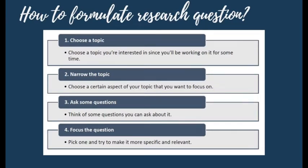How do we formulate a research question? There are four steps. The first step is to choose a topic. You have to choose a topic you're interested in, since you will be working on it for some time.